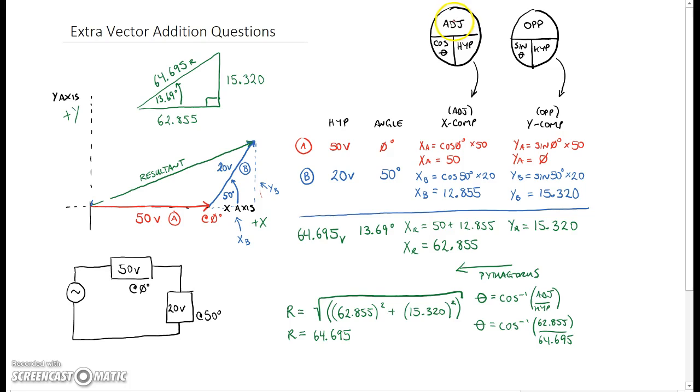For the x component, that's essentially the adjacent and based off of cos. Based off of cos, we've got the adjacent or the x component equal to the cos of the angle times the hypotenuse. So here we've got cos of 0 times 50, which obviously gives us 50 because there's no angle. And for the opposite or this side right here, you can see that there's no angle so obviously that has to be 0, but it's the sine of the angle times the hypotenuse. So sine of 0 times 50 gives us 0.